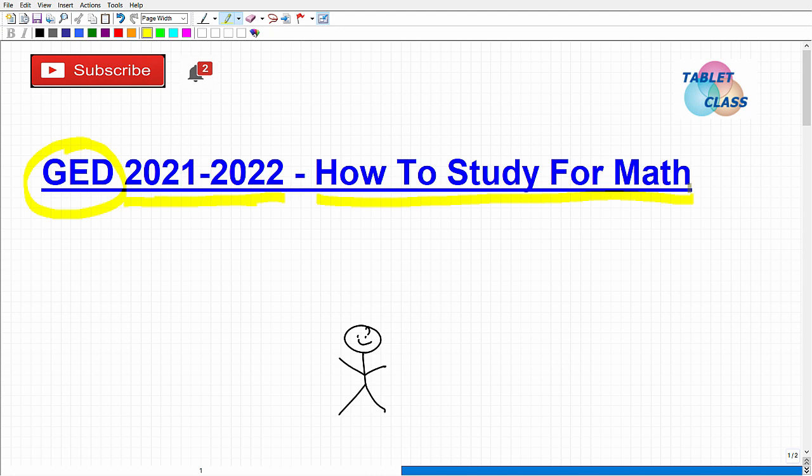Math is the number one topic that stops people from getting their high school equivalency. It's the toughest topic for most people. So if you're in that situation, this video is going to help you out. Before we get going, let me introduce myself. My name is John. I'm the founder of TabClass Math. I'm also a middle and high school math teacher, and I have a GED math test prep course that's been out there for many years. Thousands of people have used it successfully. I'm going to leave a link to this course in the description.